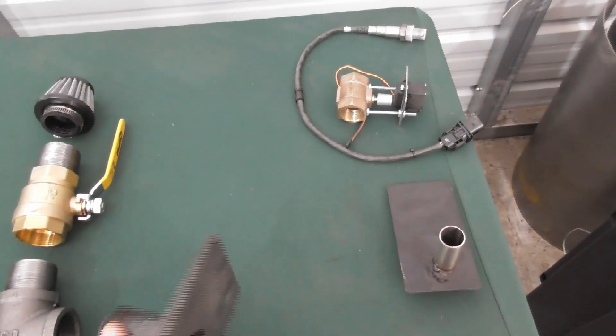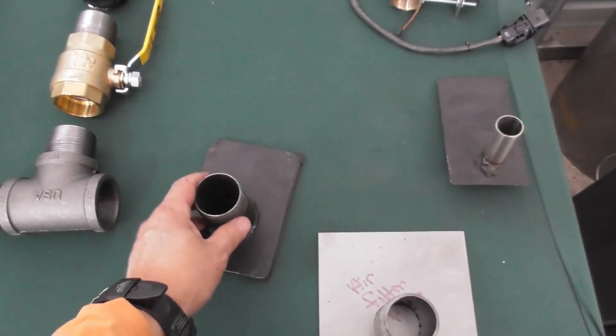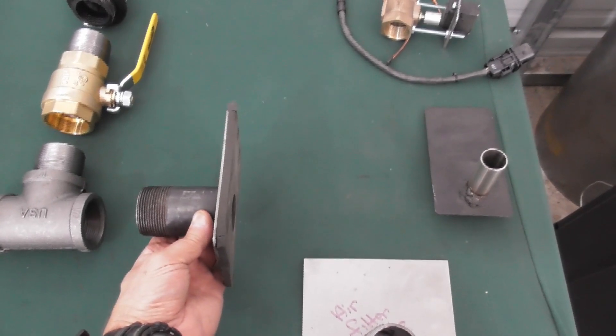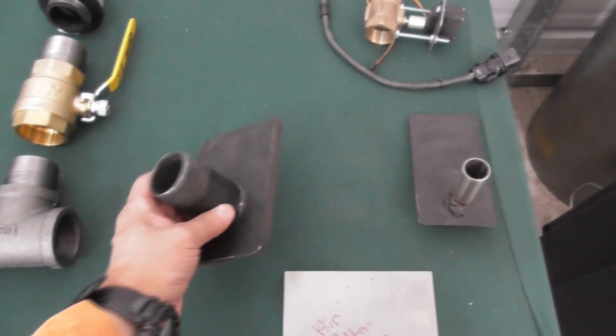So what we do is just a simple adapter plate that fits into your air filter and we put a half nipple on it to whatever size. This is a one and a half inch nipple.